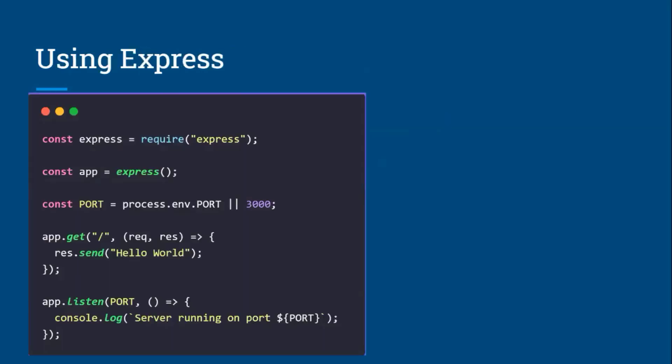Using Express: first, require the Express module, then initialize the app by calling the Express function, and set up a port to serve your server. A GET request helps with routing — the slash path is the route, and the request/response with 'Hello World' is the handler. To serve, use app.listen with the port number, and optionally pass a callback function that logs 'server running on port' to the terminal.